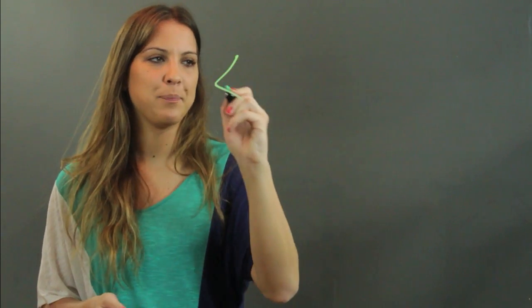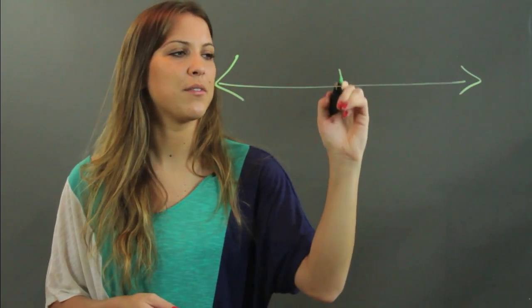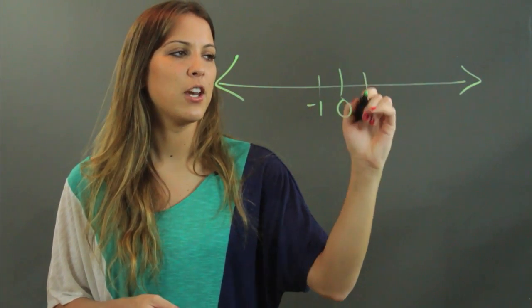So normally on a number line, you've got your negatives on your left, your zero balancing you out in the middle, and your positives on your right.